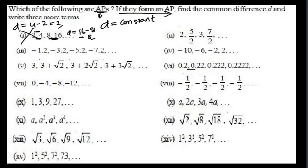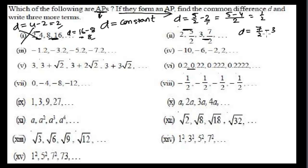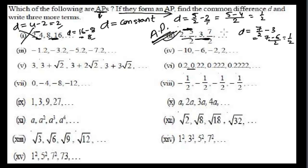Here, the second term is 5/2 and first term is 2. The common difference is 5/2 minus 2, which equals 1/2. Checking again: 7/2 minus 3 equals 1/2 as well. Since the common difference is the same throughout all terms, this is an arithmetic progression.